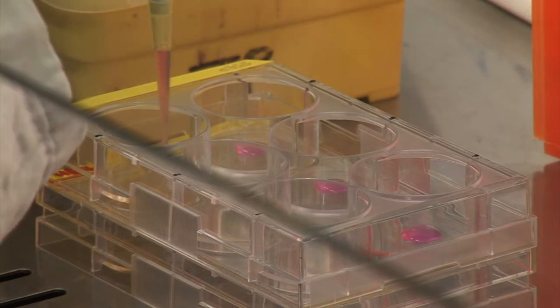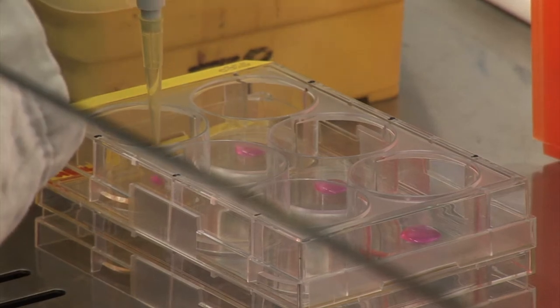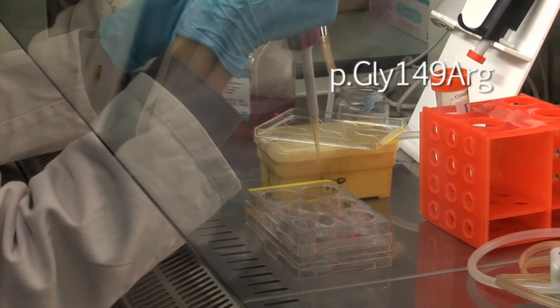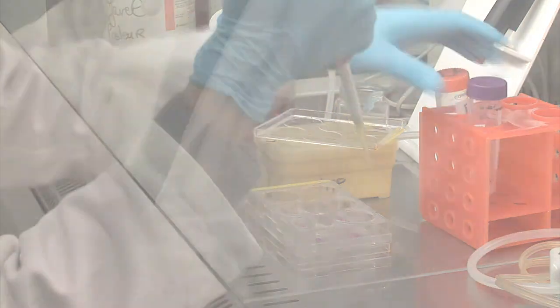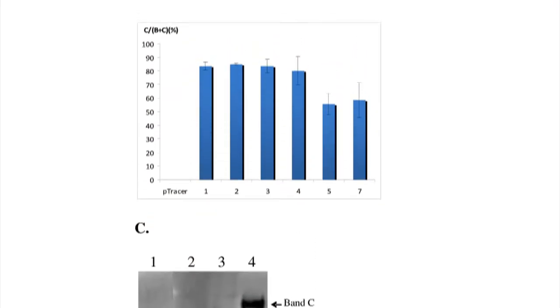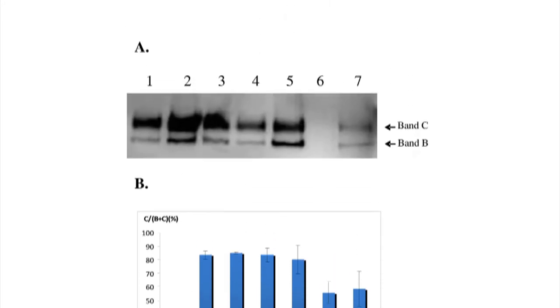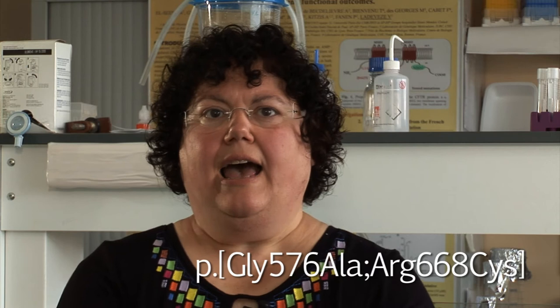Functional studies performed on all single and natural complex mutants showed that firstly, the mutation P.G149R results in a severe misprocessing defect. Secondly, this mutation moderately alters CFTR maturation. And thirdly, the two other mutations often associated in cis mildly alter CFTR chloride conductance.